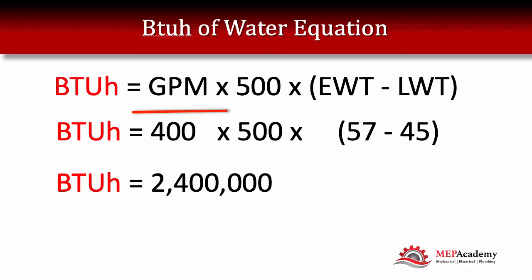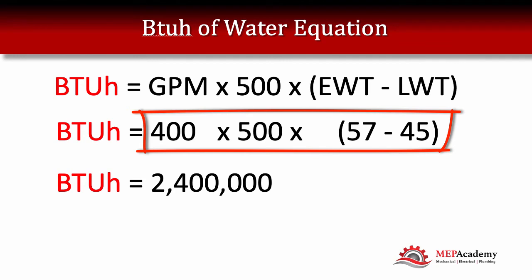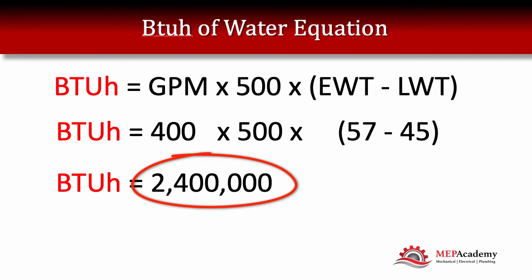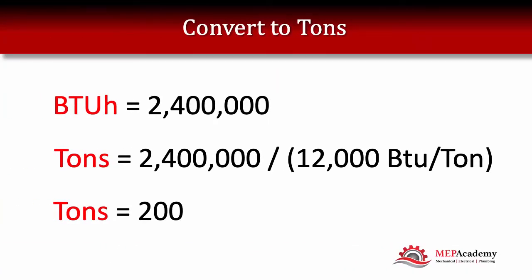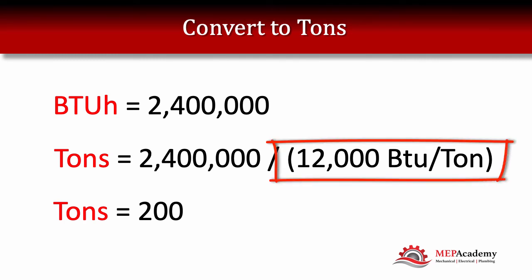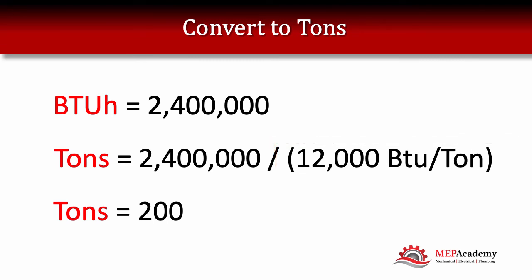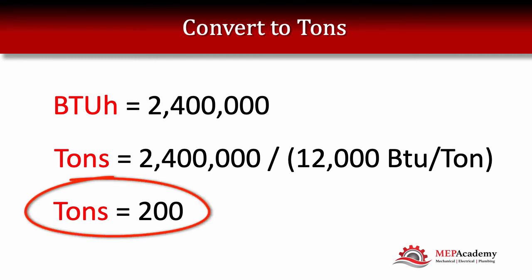Multiplying it out: 400 times 500 times 12 gives you 2,400,000 BTUs per hour. Since there are 12,000 BTUs in each ton, you take 2,400,000 and divide by 12,000 to get the quantity of tons — so that is a 200-ton chiller. That chiller is rated for 200 tons.